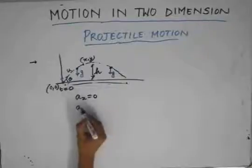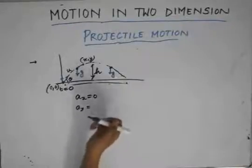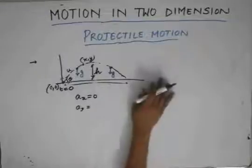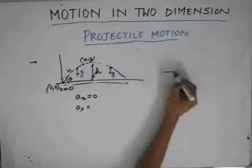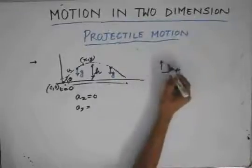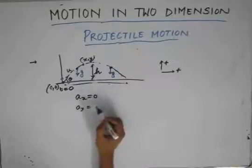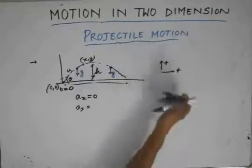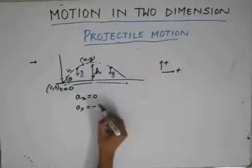What is the acceleration in the y-direction? Now, talking of the sign convention first: let us assume the rightward direction to be positive and the upward direction to be positive. Since the acceleration of the particle due to gravity is in the negative direction, I will write the acceleration in y to be minus g.